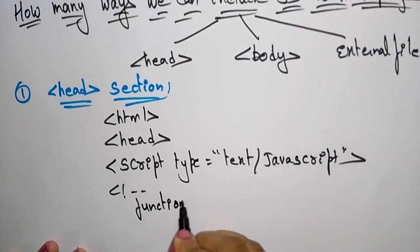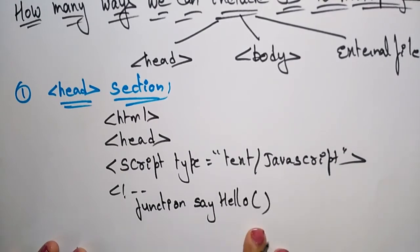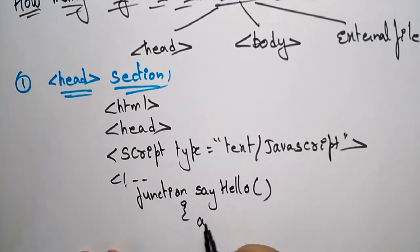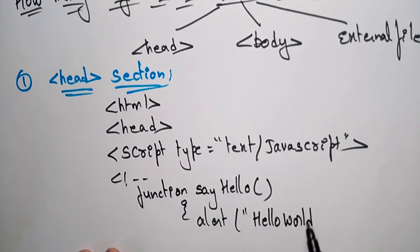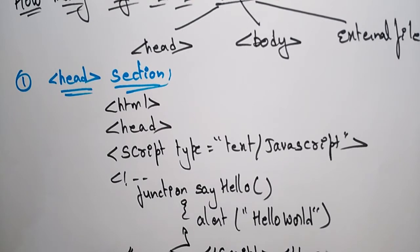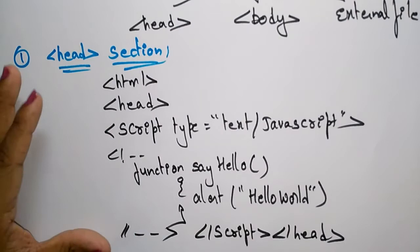So let's write a function. Here I am writing a function called sayHello. Inside the function I have an alert — so whenever I call sayHello, an alert message will be displayed saying hello world. Then close the script and close the head section. This is the script I have written inside the head section.